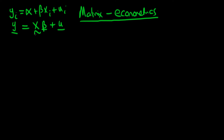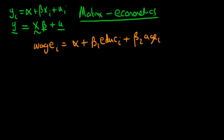This is all quite abstract — I haven't specified what y, x, or beta are — so the whole point of this video is to flesh out a particular example. Let's say there is a relationship between an individual's wages, where wages are determined by some constant alpha, plus beta one times their level of education in years, plus beta two times their age. The subscript i indicates this is one of the i individuals in my sample, where i goes from one to n. Education and age don't determine wages perfectly — there is also some idiosyncratic error for individual i.